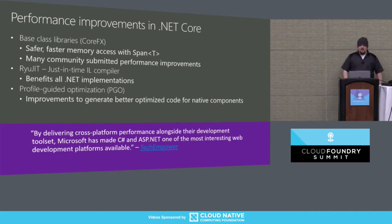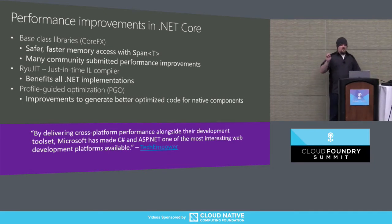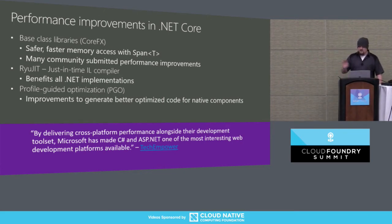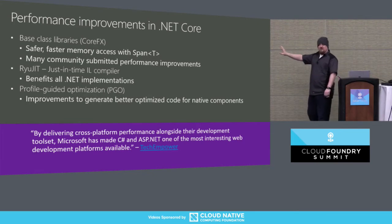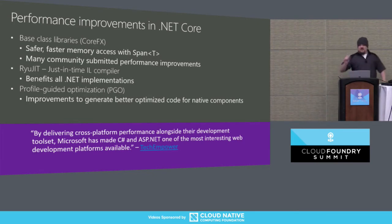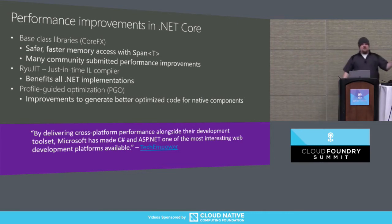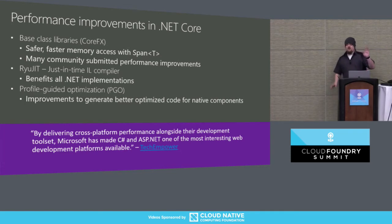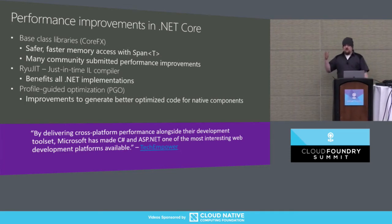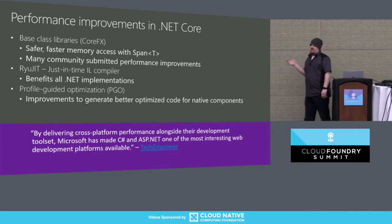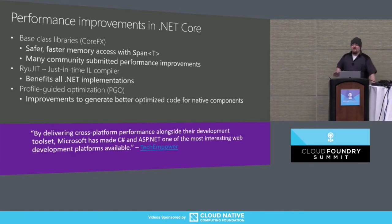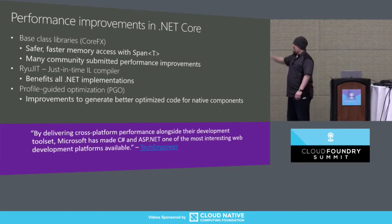For context on that improvement: in TechEmpower round 11, running on Linux with Mono .NET Framework, ASP.NET could do 2,120 requests per second. By round 13 with ASP.NET Core, we did 1.8 million requests per second — roughly an 85,900% increase, or about 859 times faster. We did a lot of work to make that happen.